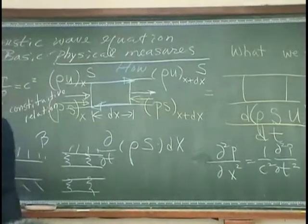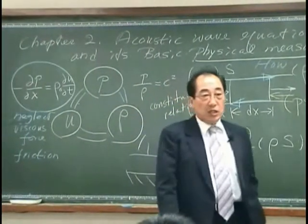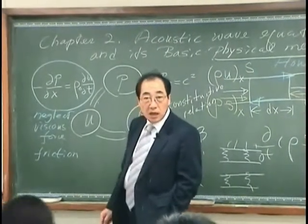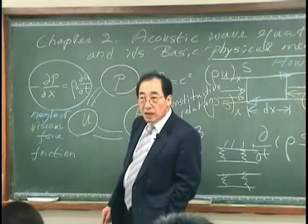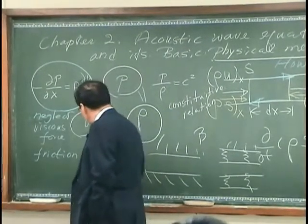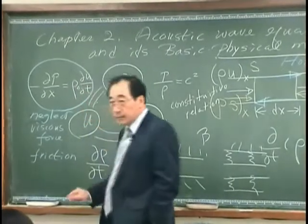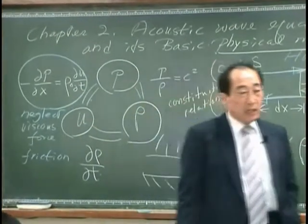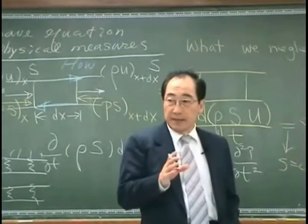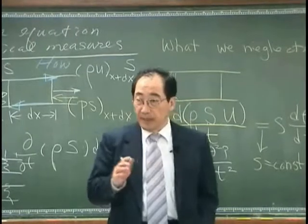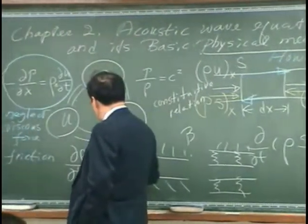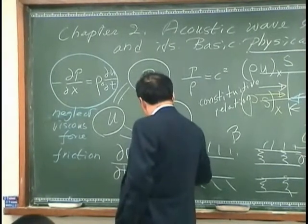The relation between the particle velocity and the density is governed by conservation of mass. That simply says that dρ/dt, that is change of density per unit volume with respect to time, has to be balanced by d/dx(ρu).